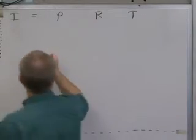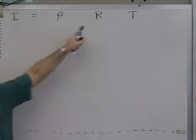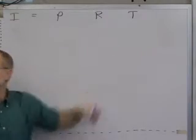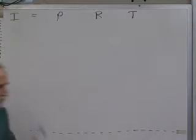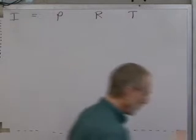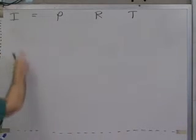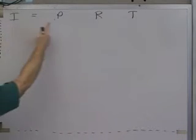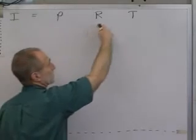What we want to do now is be able to find any one of these items given the other three. So really, there are four formulas. There's a formula for finding interest, one for finding principle, one for finding rate, one for finding time.